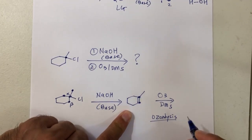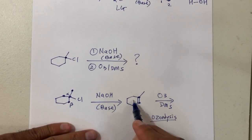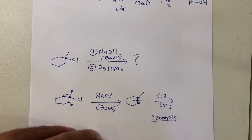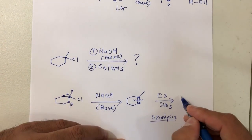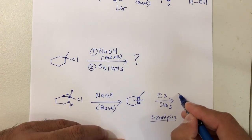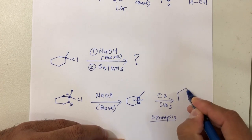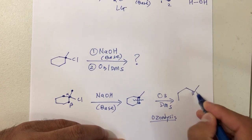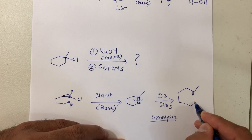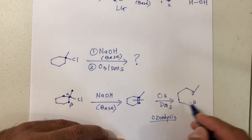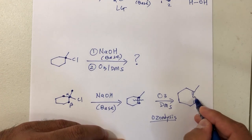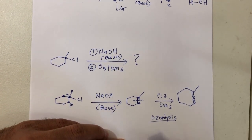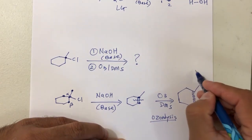In ozonolysis, you break down the double bond right in the middle and put oxygens on each side. That should be your product — you split the double bond right in the middle and put an oxygen on each side.